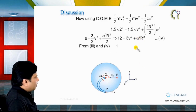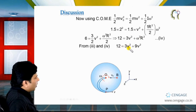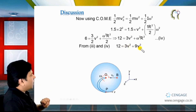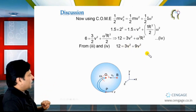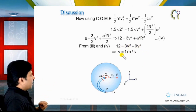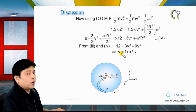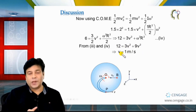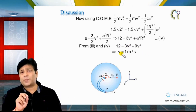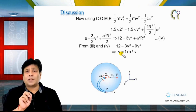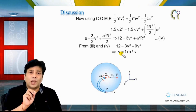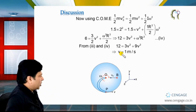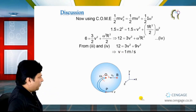Substituting ωr = 3v from equation 3 into the energy equation: 12 = 3v² + 9v² = 12v², giving v = 1 m/s. This is the speed of the ball at the time of leaving the disc at position P.